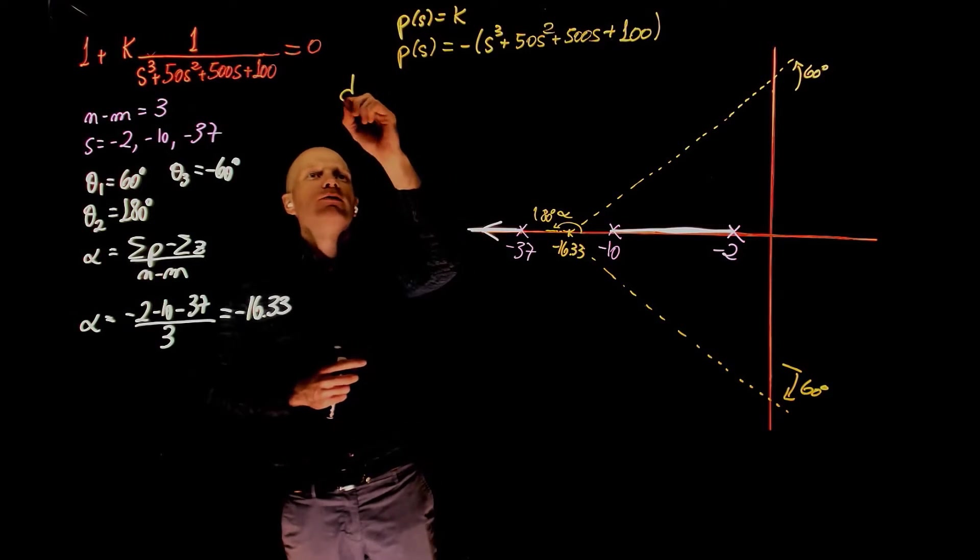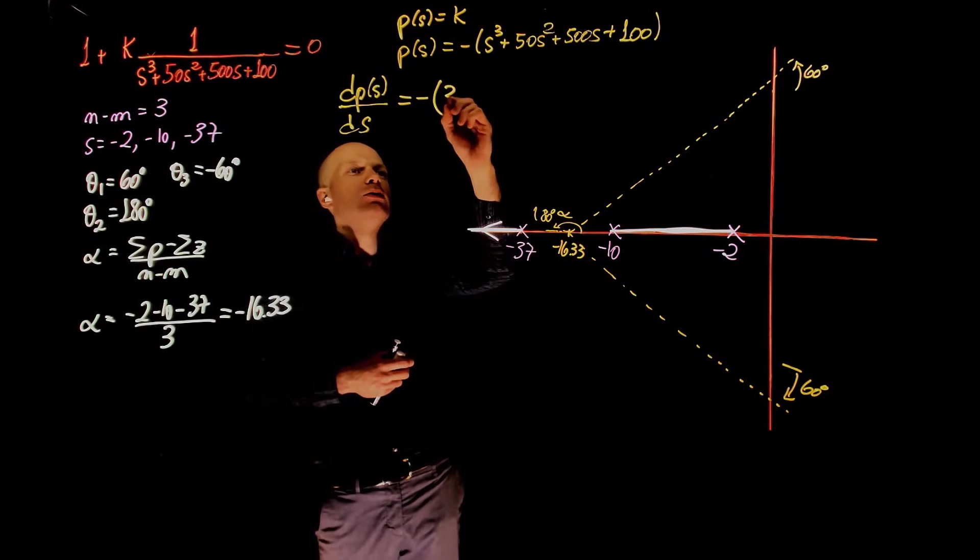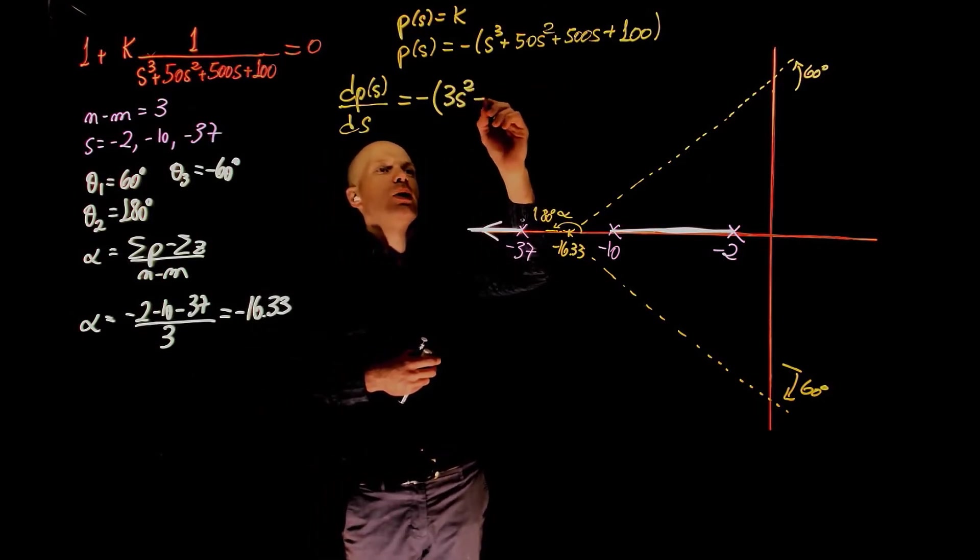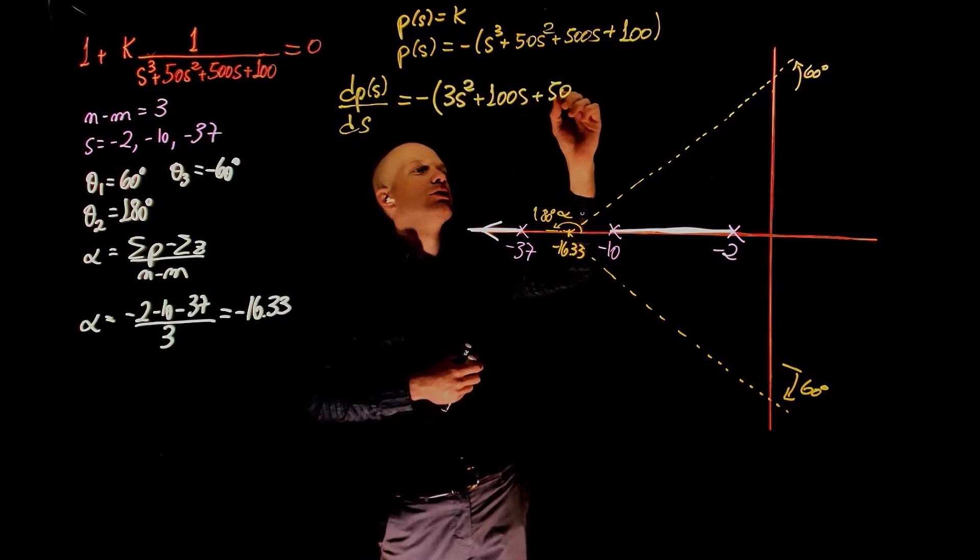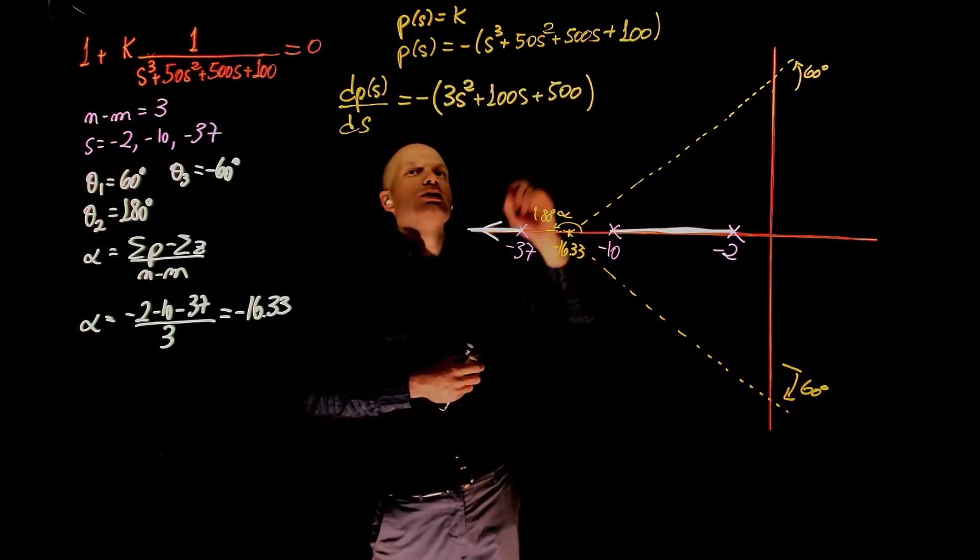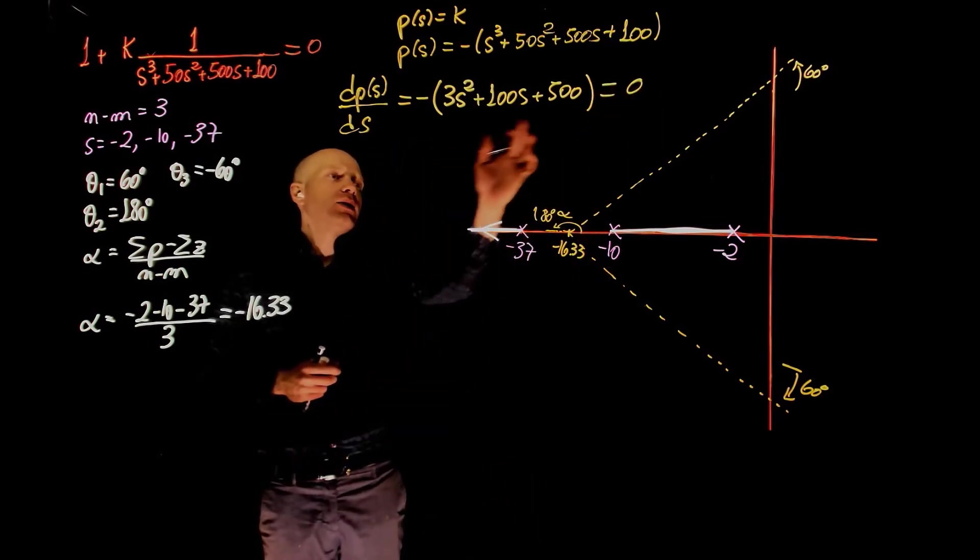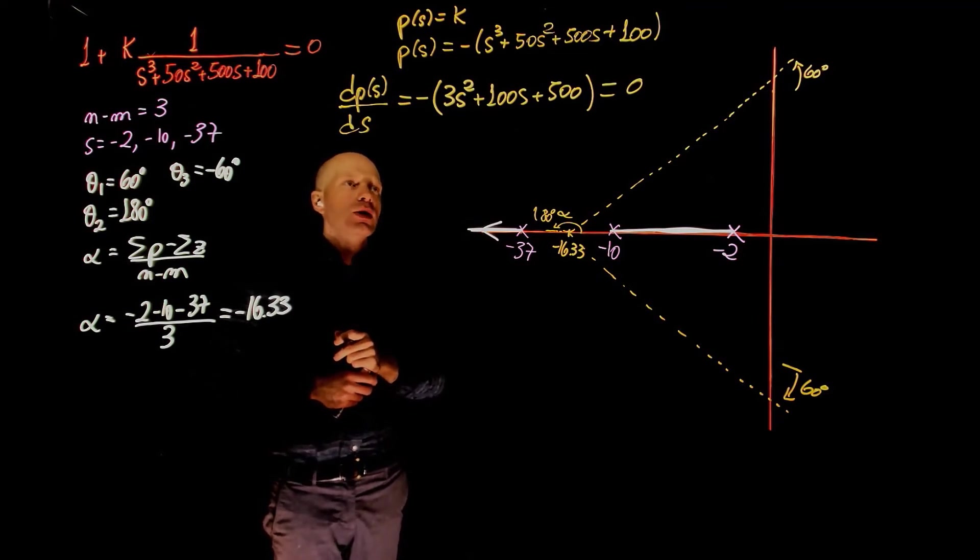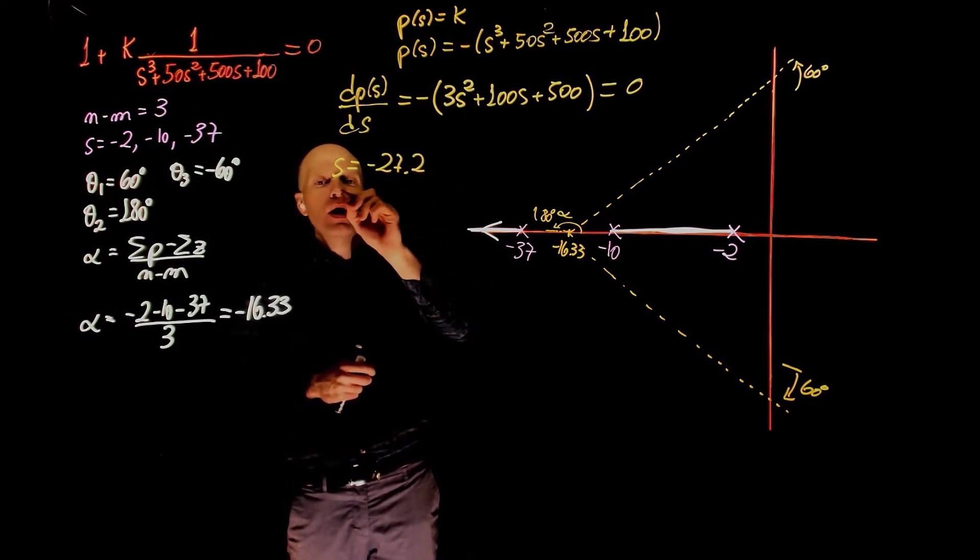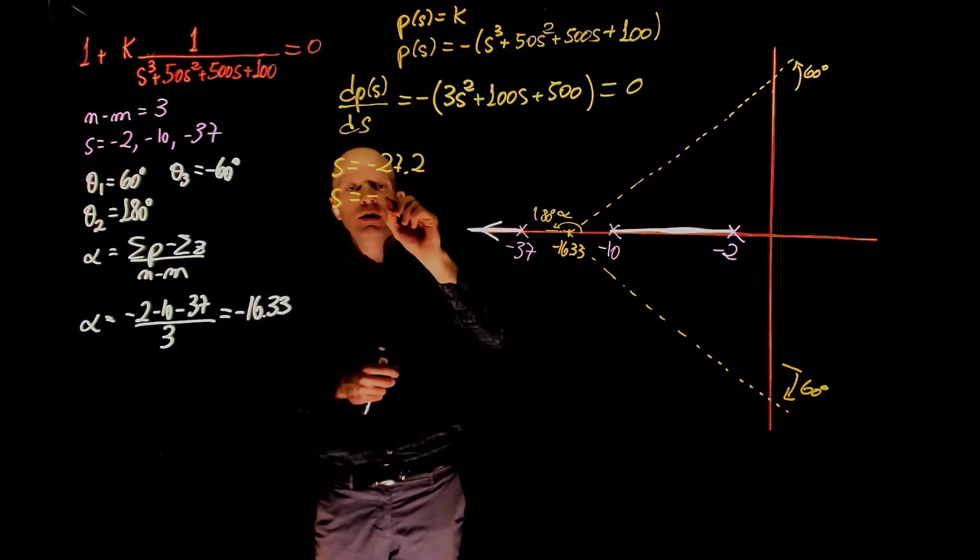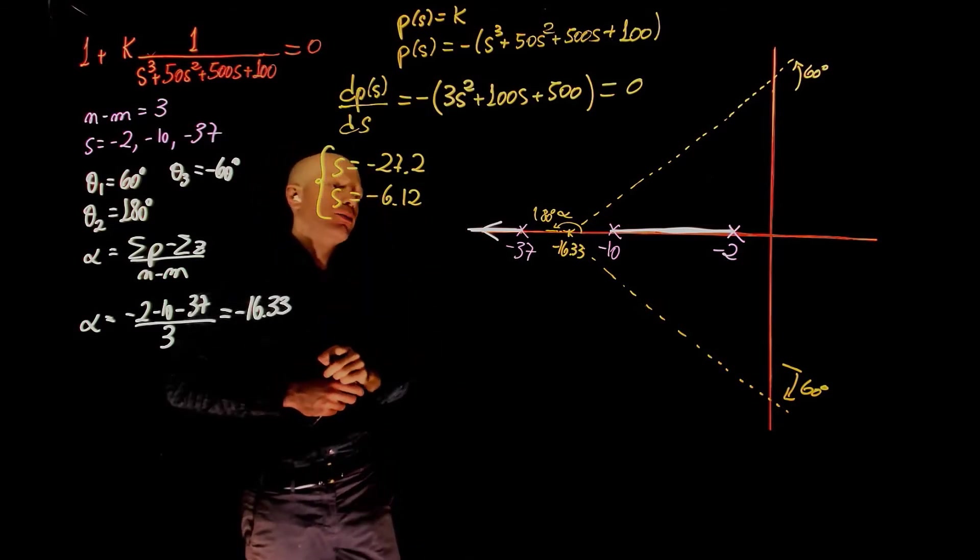And now we take the derivative of P of s with respect to s. s to the power of 3 is 3s squared, 50s squared is 100s, 500s is 500, and 100 is 0. And now we set this to 0. This is now a second order polynomial, easy to find the roots. And the roots here are s equals to negative 27.2 and s equals to negative 6.12. These are the potential breakaway or breaking points.